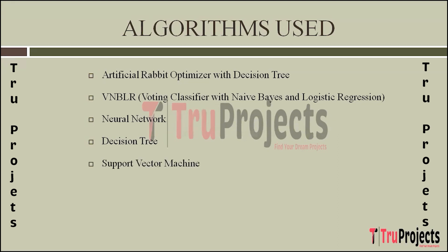The next algorithm is Support Vector Machine (SVM). SVM is a powerful classification algorithm that identifies an optimal hyperplane that best separates classes in a high-dimensional space. SVM is effective in capturing complex relationships and is suitable for heart disease prediction where non-linear patterns might exist. It aims to maximize the margin between classes, enhancing generalization to new data.